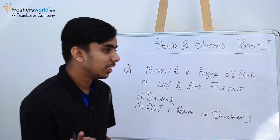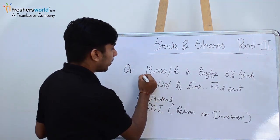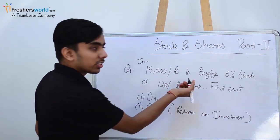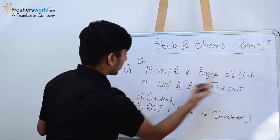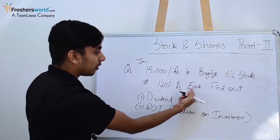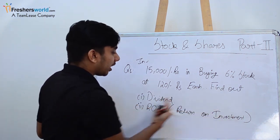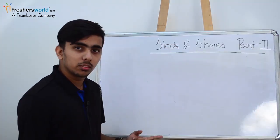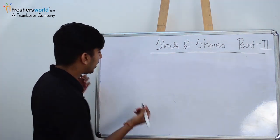Let's begin with our first question. If you invest 15,000 rupees in buying 6 percent stock at 120 rupees each, find out dividend and ROI. Let's find out dividend first.